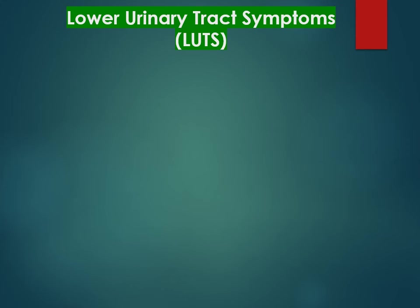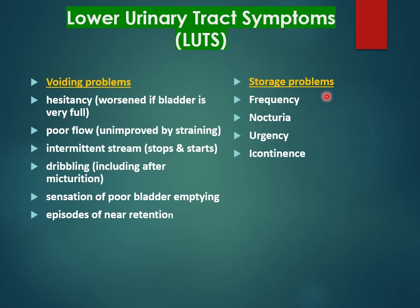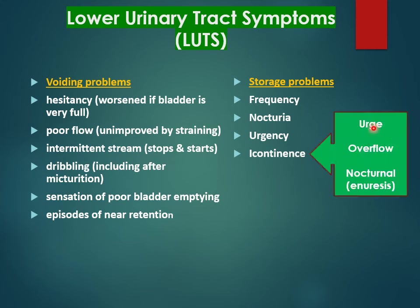The lower urinary tract symptoms (LUTS) fall into two groups. The first relates to voiding problems: hesitancy, poor flow, intermittent stream, dribbling, sensation of poor bladder emptying, and episodes of near-acute retention. The second group relates to storage problems: frequency, nocturia, and urgency of micturition. Other patients may have incontinence — either urge incontinence, overflow incontinence, or nocturnal incontinence, also known as enuresis.